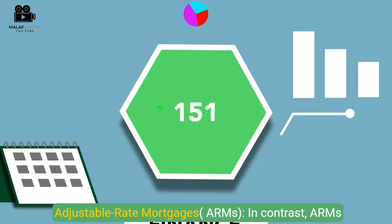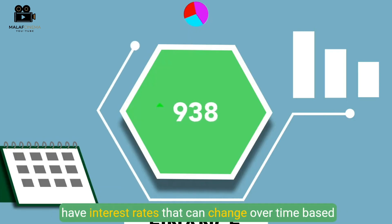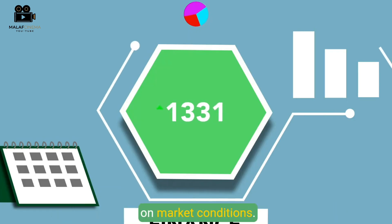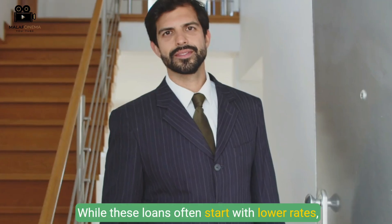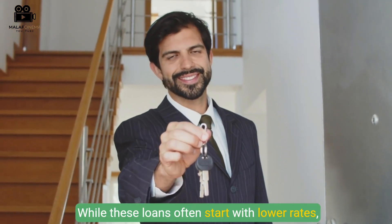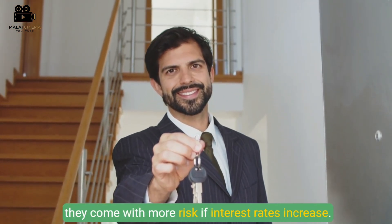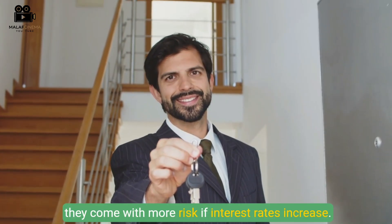Adjustable-Rate Mortgages (ARMs), in contrast, have interest rates that can change over time based on market conditions. While these loans often start with lower rates, they come with more risk if interest rates increase.